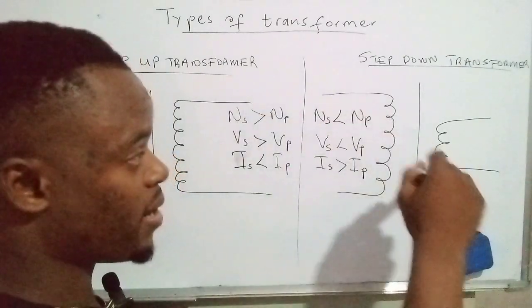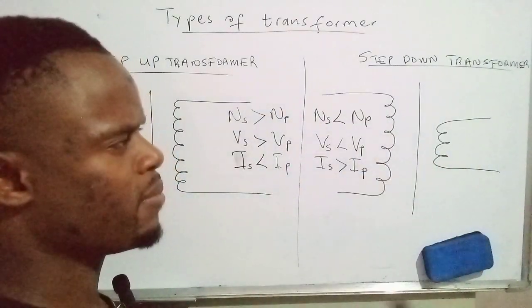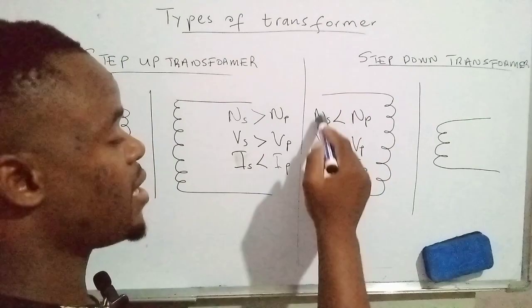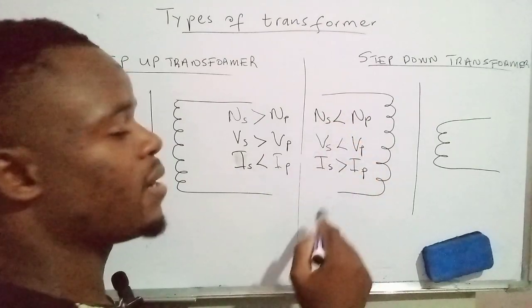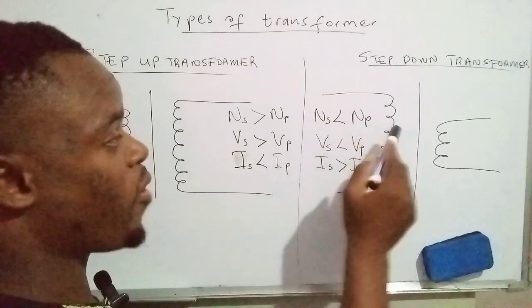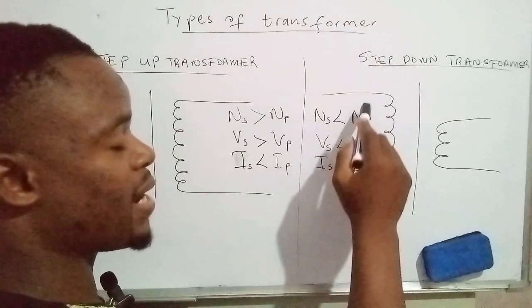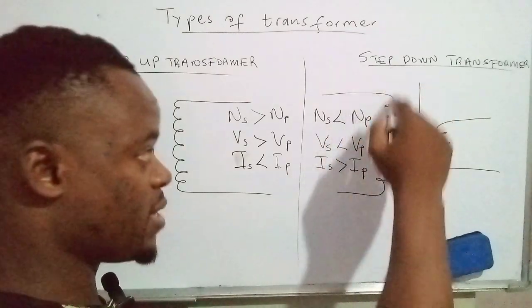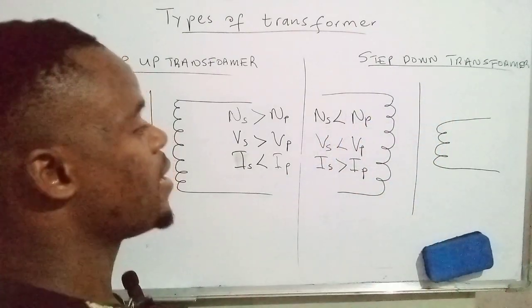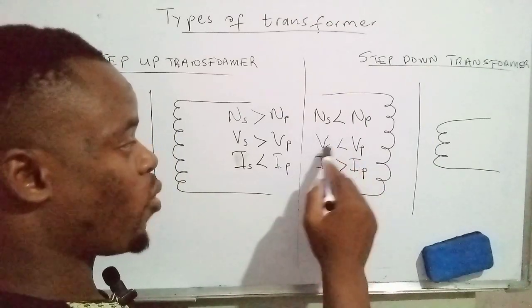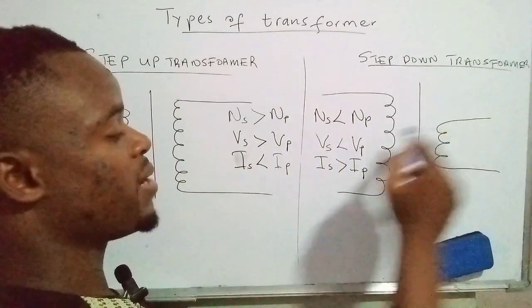in the secondary coil. Mathematically that is shown by this: the number of turns in the secondary coil is actually less than the number of turns on the primary coil. The voltage across the secondary coil is less